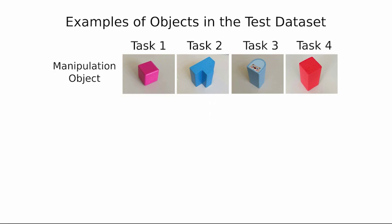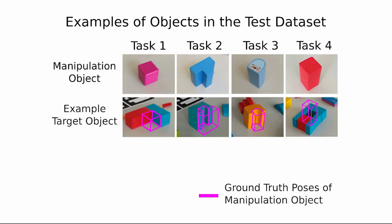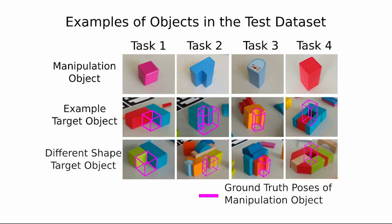To evaluate our approach, we capture a dataset with real objects. We capture 24 different objects categorized into 4 tasks. For each task, we capture the example object whose mesh is provided in the training dataset, and 5 other objects with a different shape.